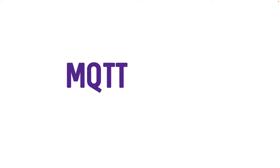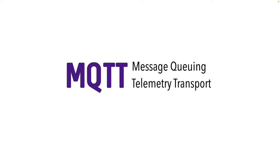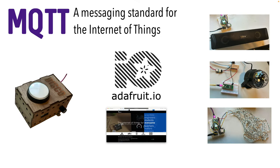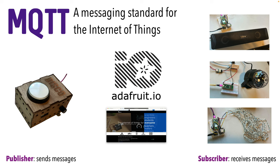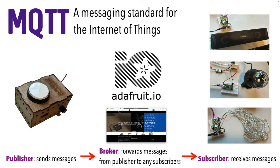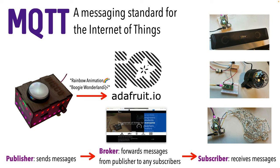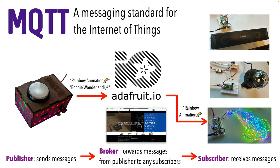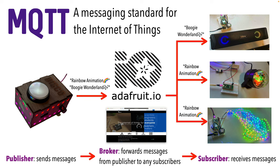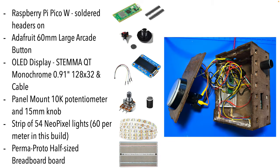The project works using MQTT, an open standard for the Internet of Things used to send messages between devices. In IoT speak, a publisher sends messages, subscribers receive and can react to those messages, and a broker is in the middle forwarding publisher messages to subscribers. In this build, the disco button is the publisher. Pressing the button sends a message to run an LED animation and play a song. Adafruit IO, which is free, acts as the broker, and I've got subscriber code running on devices that animate LED lights, play a selected song, and turn on the disco projector.